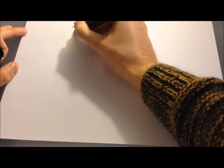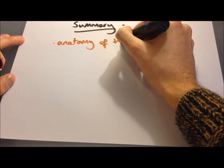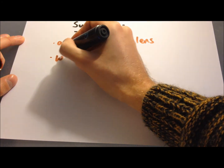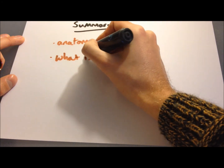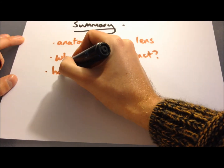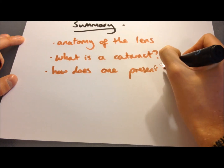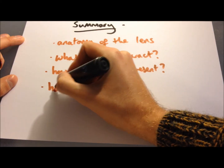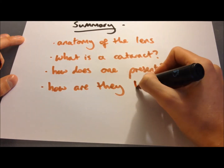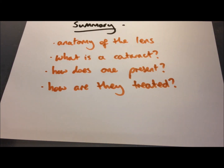In summary, we've covered the anatomy of the lens, what a cataract is — an opacification of the lens — how it presents with reduced visual acuity, glare around lights, and visible changes on slit lamp examination, and how it's treated — mostly with surgery using the phacoemulsification method.